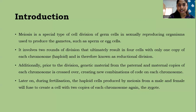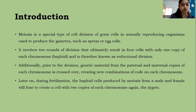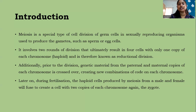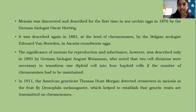Meiosis is a special type of cell division of germ cells in sexually reproducing organisms, used to produce gametes like sperms and eggs. It involves two rounds of division that ultimately result in four cells with only one copy of each chromosome — the haploid condition — and is therefore known as reductional division. Unlike mitosis, which is equational division, meiosis is reductional. Prior to division, genetic material from paternal and maternal chromosomes is crossed over. During fertilization, the haploid cells fuse to create a zygote with two copies of each chromosome.